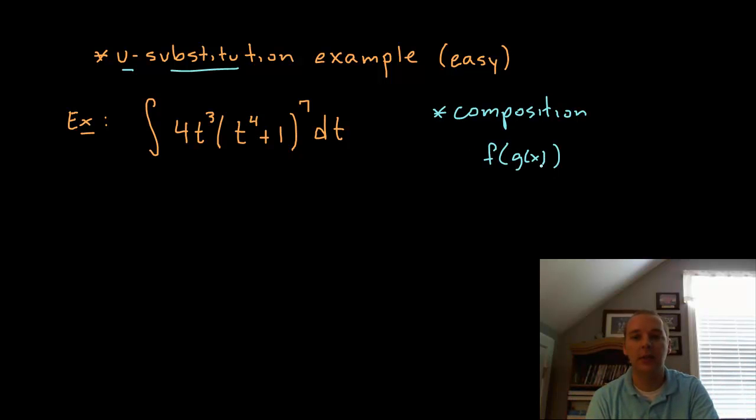This happens a lot with square roots where you have the square root of something else, or trig functions like sine, cosine, or tangent of other things, exponentials where you have not just e to the x but maybe something in the exponent. And what gives it away here is I see a power on the outside and I see an expression on the inside.